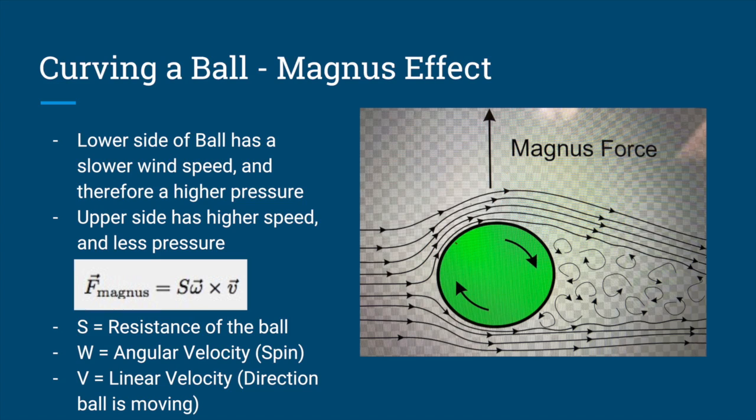In this equation, S stands for the resistance of the ball, W is the angular velocity — essentially the spin of the ball — and the linear velocity is how fast the ball is moving in whatever direction it was kicked.